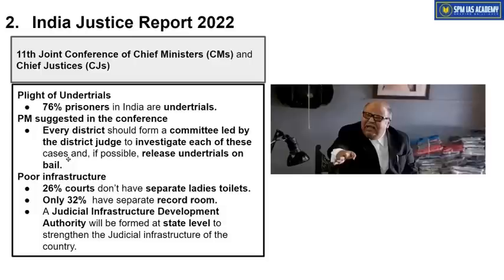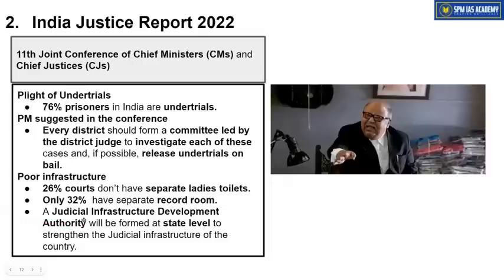Regarding judiciary infrastructure — mains answers cannot be generic statements like 'infrastructure is poor.' You need to quote specific data. For example, from this conference: 26% of courts do not have separate ladies' toilets, and only 32% have a separate record room — otherwise records are kept on tables near the judges. To address infrastructural problems, a Judicial Infrastructure Development Authority will be formed at the state level to strengthen judicial infrastructure.